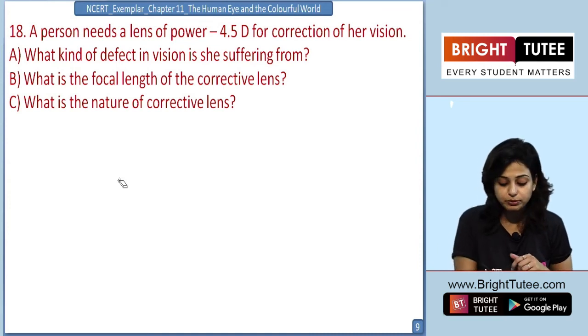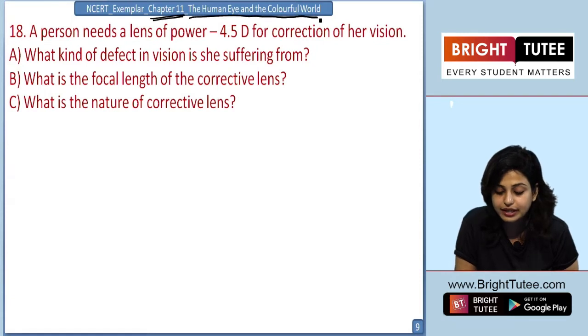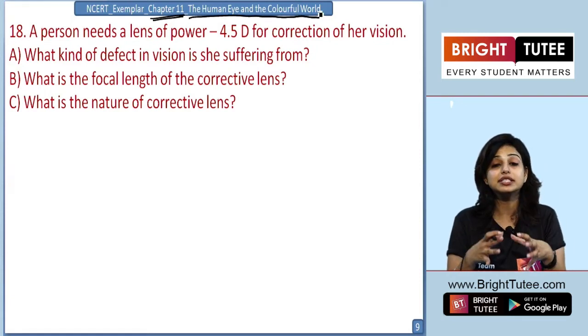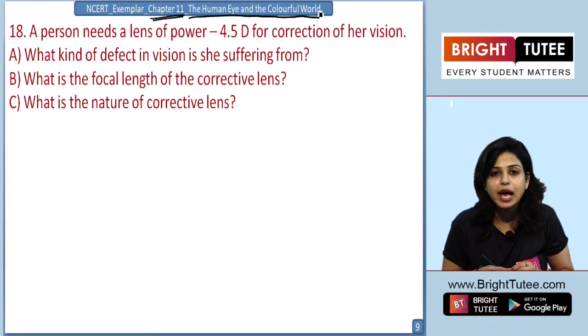Today we are going to do a problem from chapter 11 of the NCERT: the human eye and the colorful world. This chapter is conceptual, and some numericals come from the exemplar. So why not solve them?